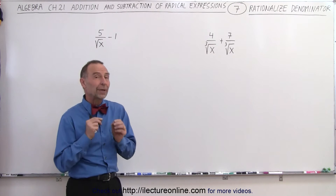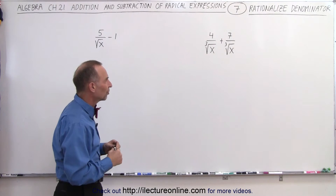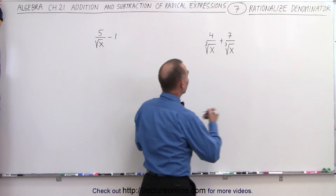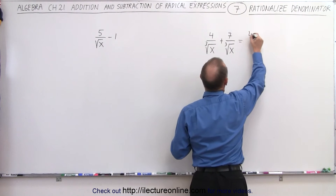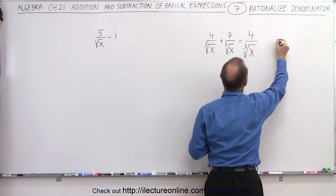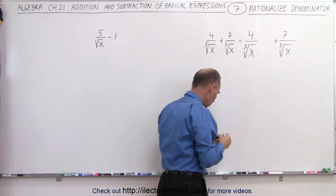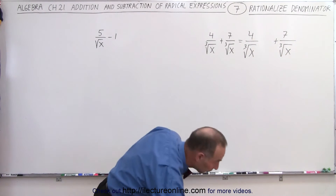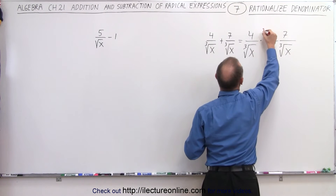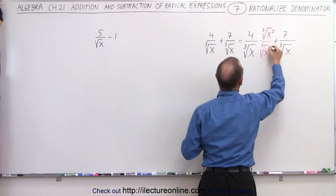We want to change them in such a way that we end up with something cubed underneath that cube root symbol. We're going to rationalize the denominators by doing the following. We're going to write this as 4 over the cube root of x plus 7 over the cube root of x, and what we're going to do is multiply the numerator and the denominator by the cube root of x squared.